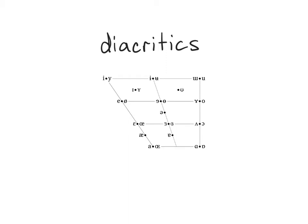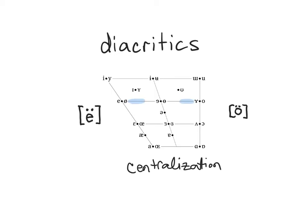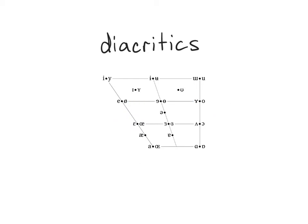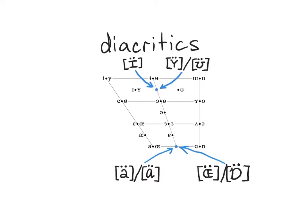The IPA also has two special diacritics that can be used to represent frontness and backness or height differences, but in a different way. Two dots over a base symbol, called a diaeresis or umlaut, can be used to represent centralization of the articulation. That is, for front vowels they are articulated somewhat backer, and for back vowels they are articulated somewhat fronter. This can be used to represent a truly central vowel when the IPA does not provide a relevant base symbol.